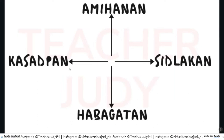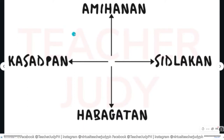Timanay lang ninyo ang word na CASH — with a K — kasadpan, amihanan, sidlakan, habagatan. Mas dali mahinumduman sa mga bata kung mahatagan og timailhan. So ang CASH dali lang mahinumduman. Ang mas mahinumduman nila, ang English version. So sa exams, huna-huna lang nila CASH: kasadpan, amihanan, sidlakan, o habagatan.